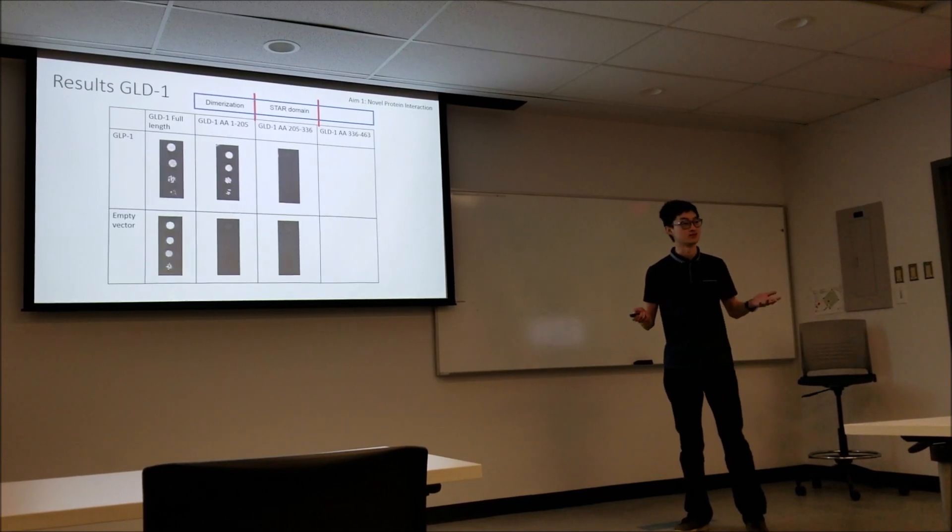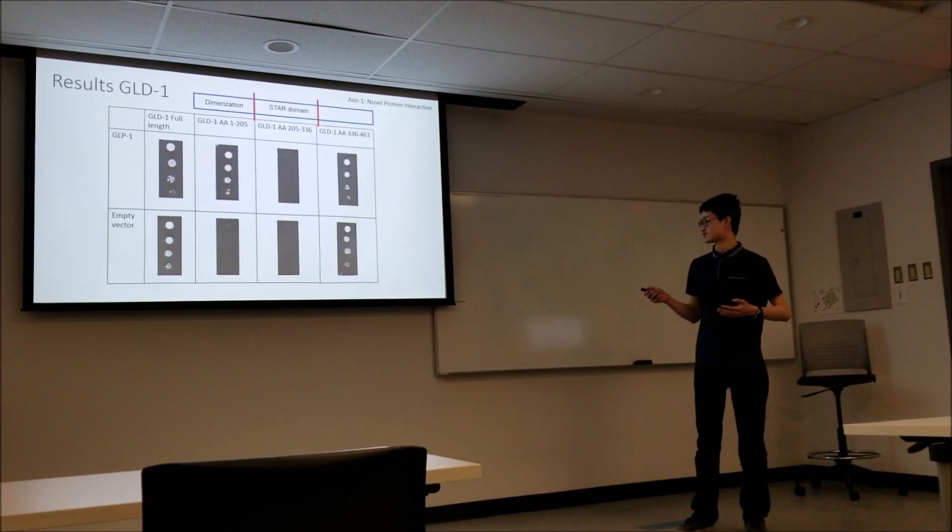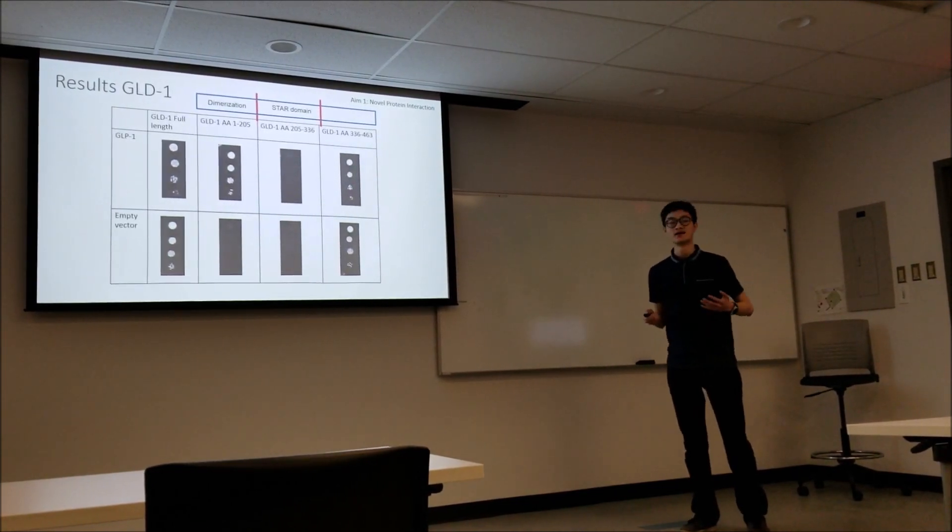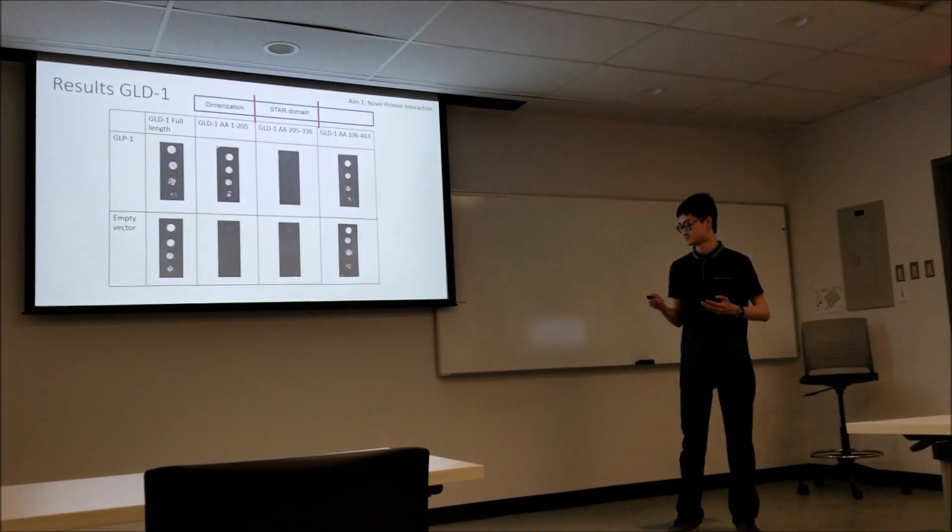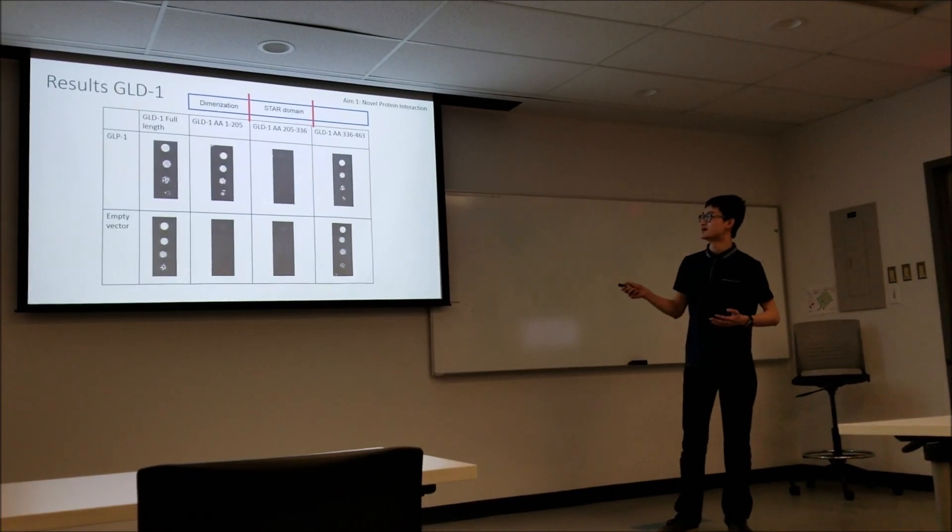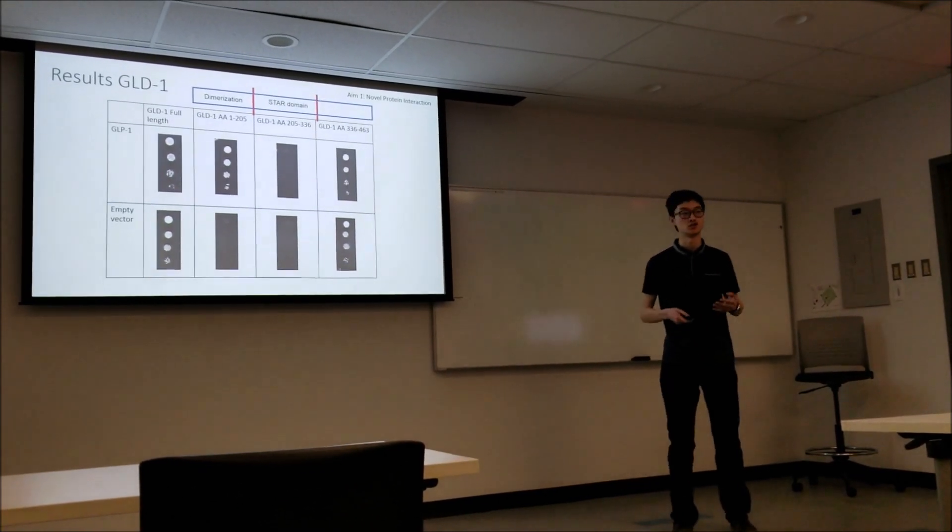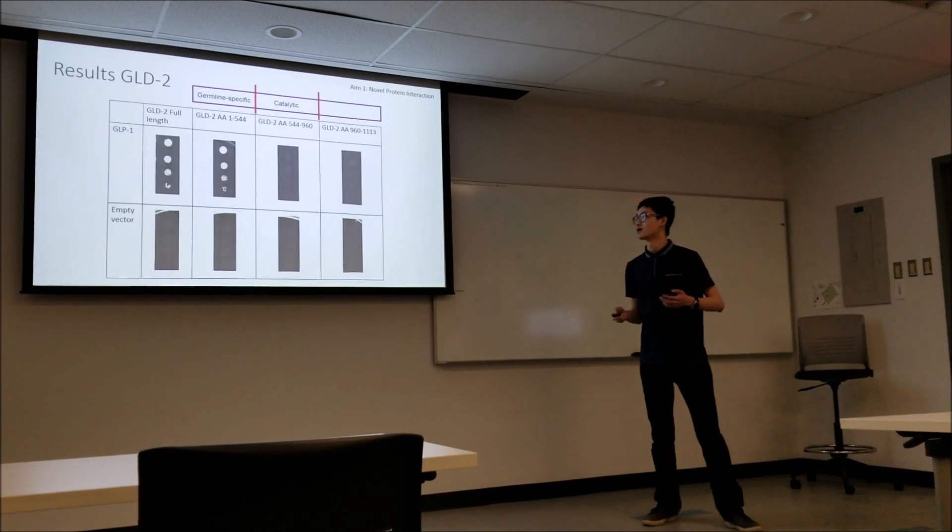Second truncation doesn't seem to be any interaction. Third one, at first glance, it's like oh yay, but again we have that problem where there's some background showing up in the negative control. So we don't know if that's real or not. For GLD1, it really seems like this dimerization domain is the important domain.